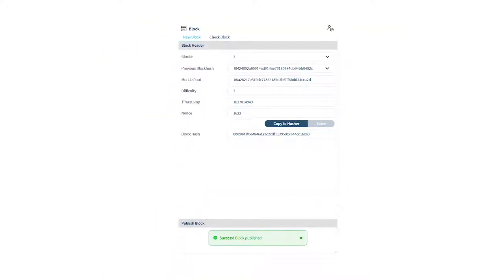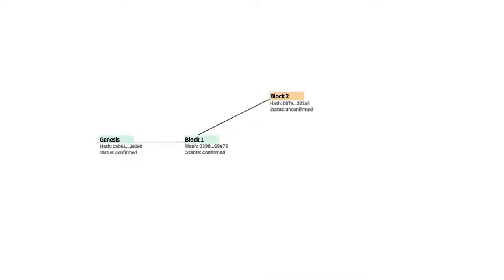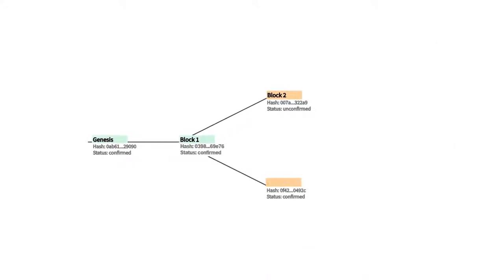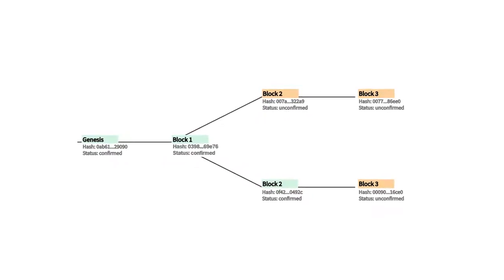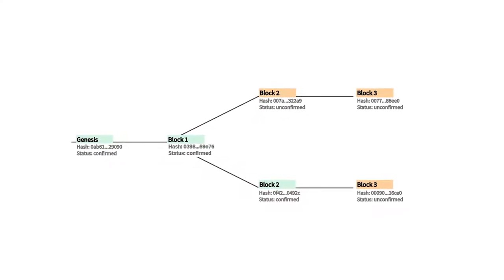Lastly, when it comes to explaining the consensus algorithm, the gap between reality and abstraction becomes even greater. The game theory aspect of a blockchain is a tough one.